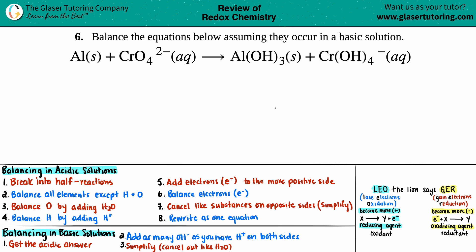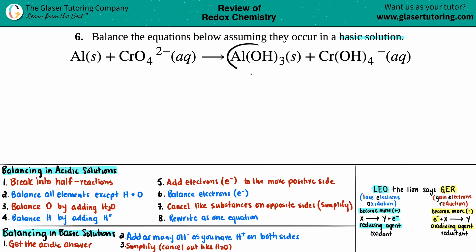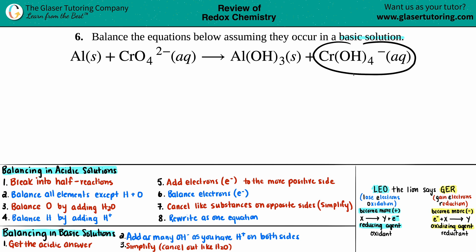Number six: balance the equations below, assuming they occur in a basic solution. We have aluminum solid plus CrO₄²⁻ aqueous, which yields aluminum hydroxide Al(OH)₃ solid, plus Cr(OH)₄⁻ aqueous.